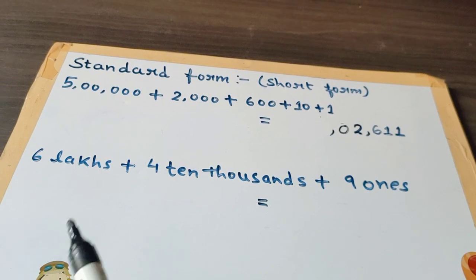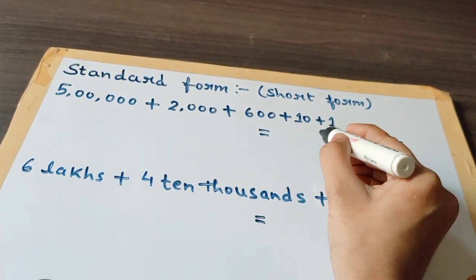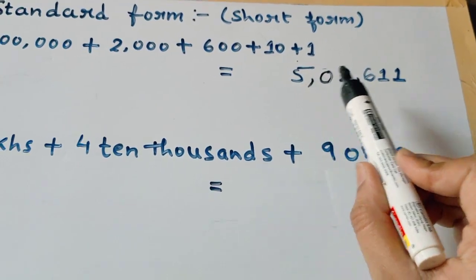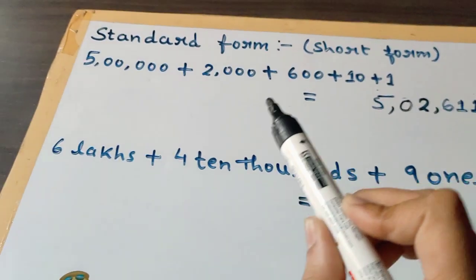After putting the comma, we have 5 lakh, so we will write 5. The number is 5 lakh 2,611. It's done students.